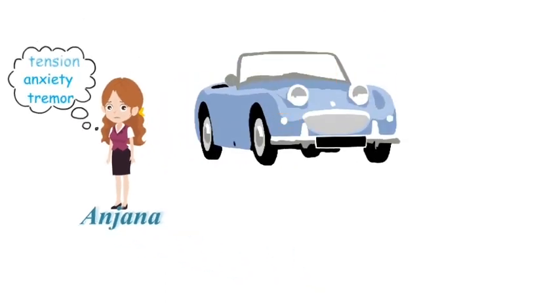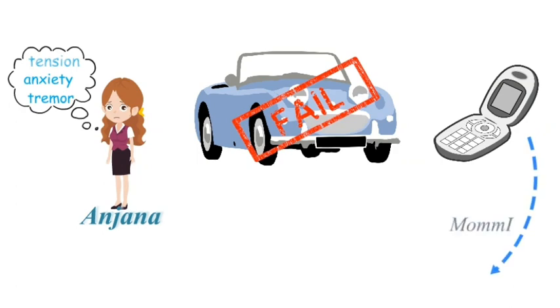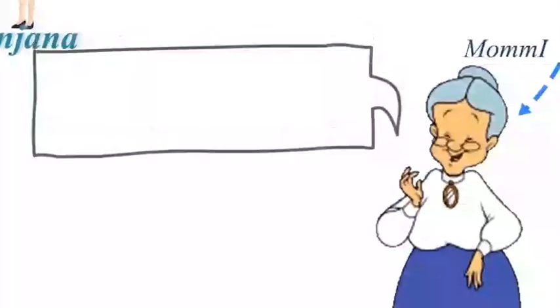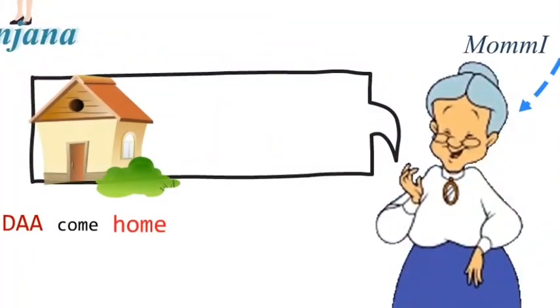As her car failed, she calls her mummy with her phone and her mummy says, Da, come home, Glukos and Maggie, Tara.